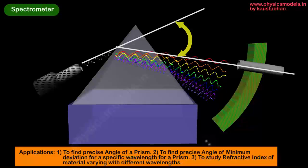The applications of the spectrometer are mentioned in this slide. As I said, you can find the angle of a prism, you can find the angle of minimum deviation, and you can also study the refractive index of glass or different materials and experiment with different wavelengths.